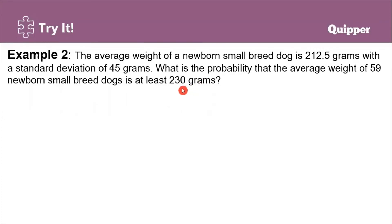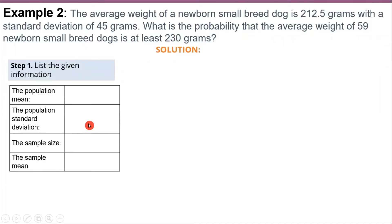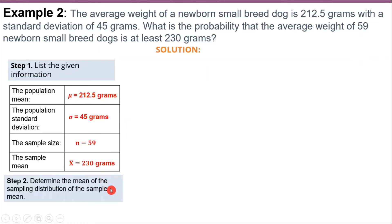For our second example, the average weight of a newborn small breed dog is 212.5 grams with a standard deviation of 45 grams. What is the probability that the average weight of 59 newborn small breed dogs is at least 230 grams? First, list down the given: population mean is 212.5 grams, population standard deviation is 45 grams, sample size is 59, and sample mean is 230 grams. Step 2: the mean of the sampling distribution is equivalent to the population mean — hence, 212.5.